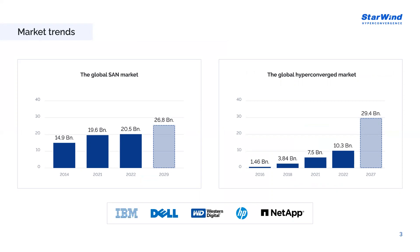Now let's look at the current landscape and market trends, and how the industry has shifted from traditional converged infrastructure toward HCI over the past decade. According to Future Market Insights, the global SAN market is projected to experience steady growth with a compound annual growth rate of approximately 4% from 2022 to 2029. In 2021 the global SAN market was valued at approximately $19.5 billion, increasing to around $20.5 billion in 2022, and by 2029 it is expected to reach approximately $26.9 billion. The SAN market is anticipated to contribute roughly 7% of the global next-generation data storage market.